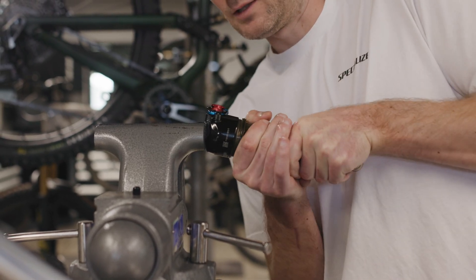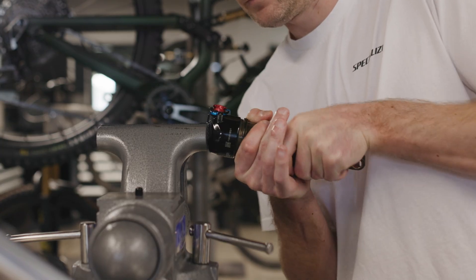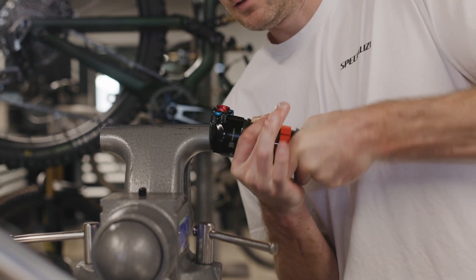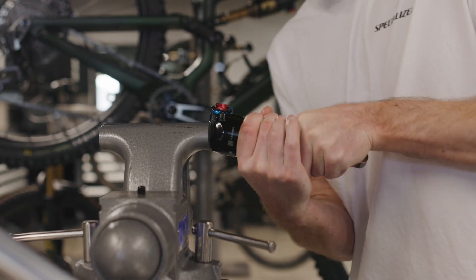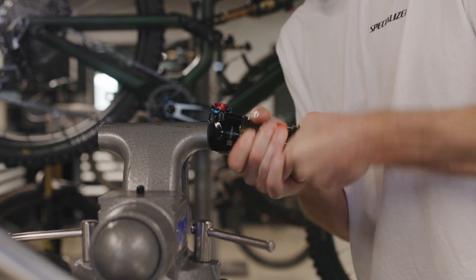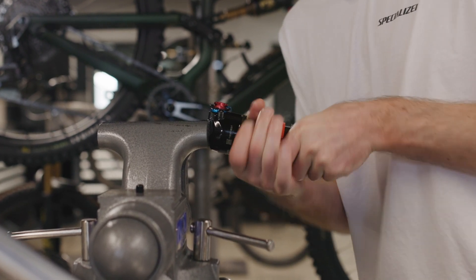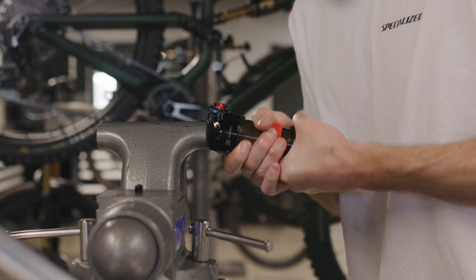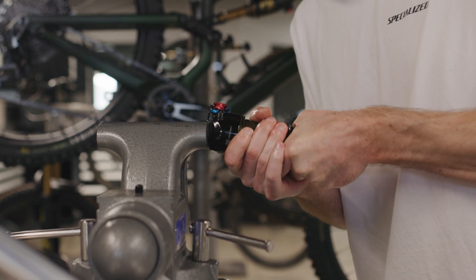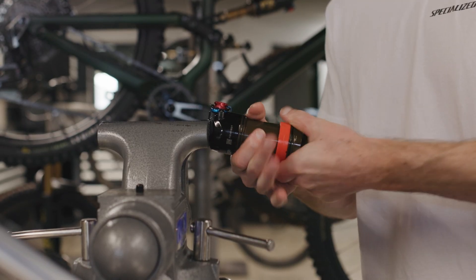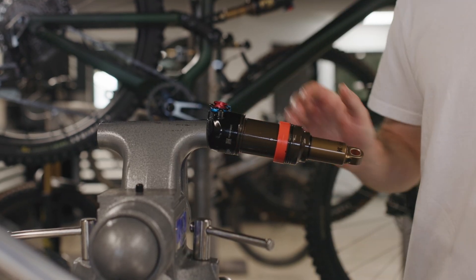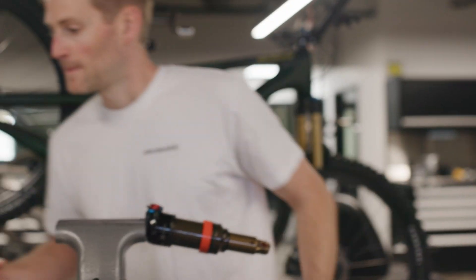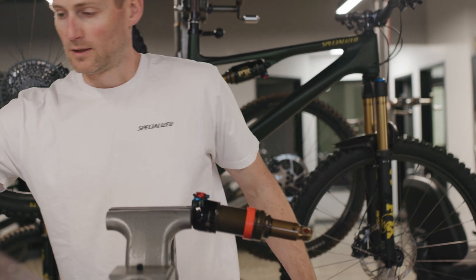There we go. And then we'll start threading the air sleeve on. Air sleeve, torque that. Do not over torque that. It doesn't require a whole lot. And then we're ready to install the extra volume sleeve.